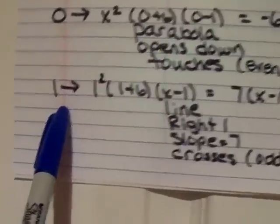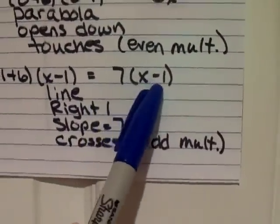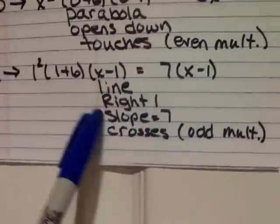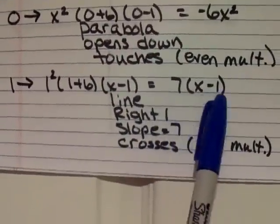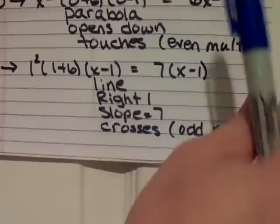And when we test 1, we put 1 in for everything except for the x minus 1, and we get 7 times x minus 1. That tells us that it's going to be a line, and this part of the equation tells us that it's going to move right 1, and the slope is 7. And this will cross the graph.